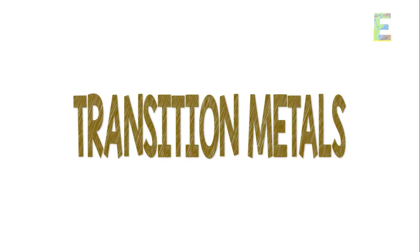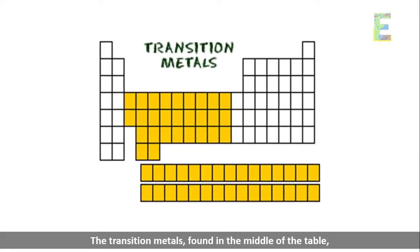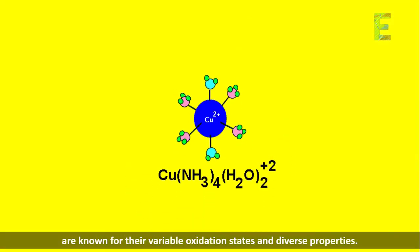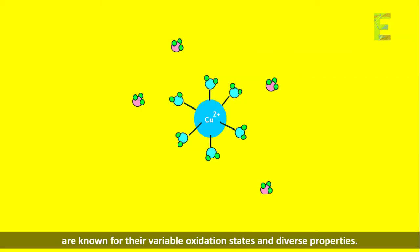Transition metals. The transition metals, found in the middle of the table, are known for their variable oxidation states and diverse properties.